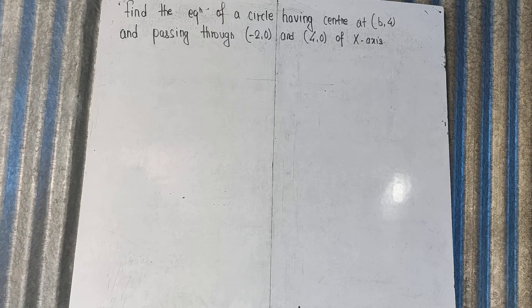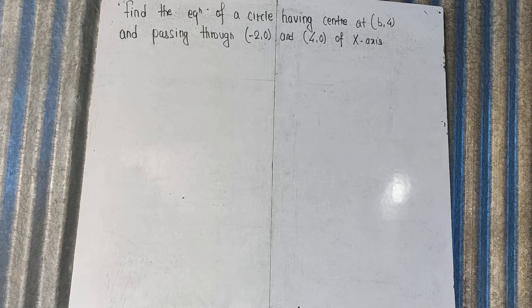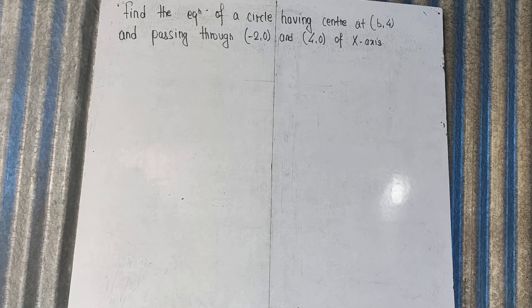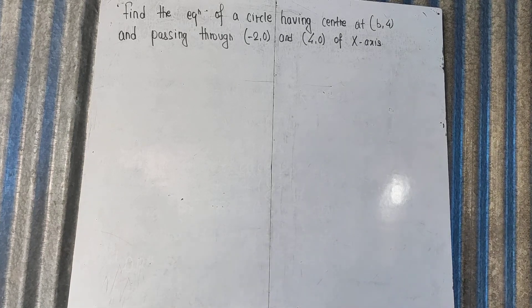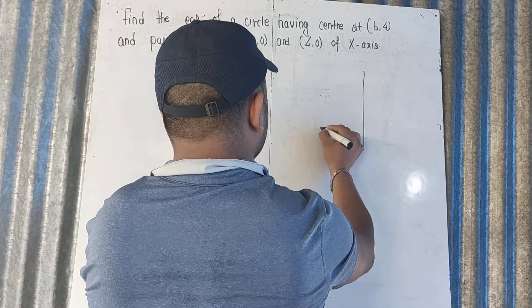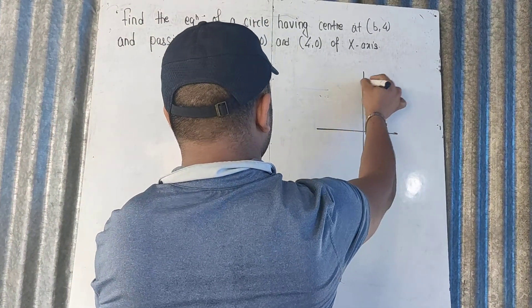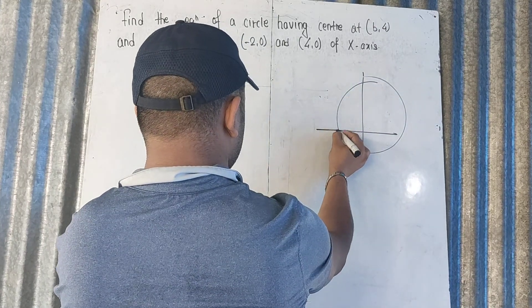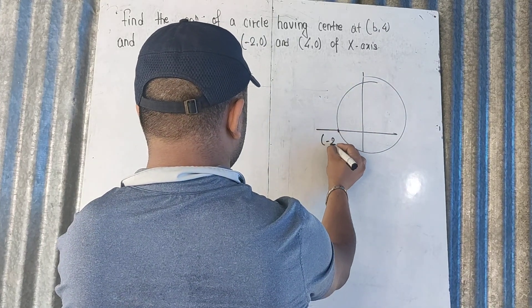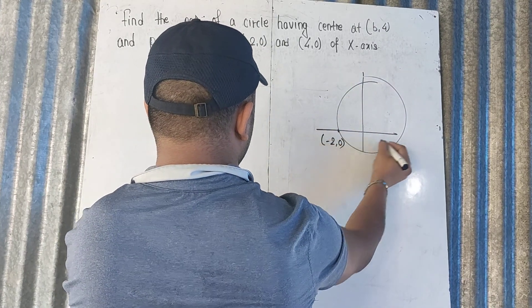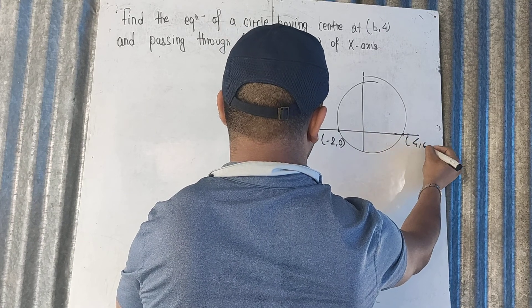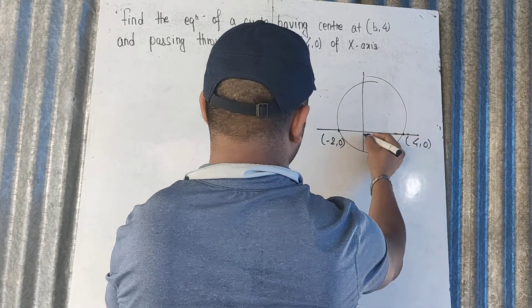Find the equation of a circle having center at (b,4) and passing through (-2,0) and (4,0) on the x-axis. The circle passes through (-2,0) here and (4,0) here.